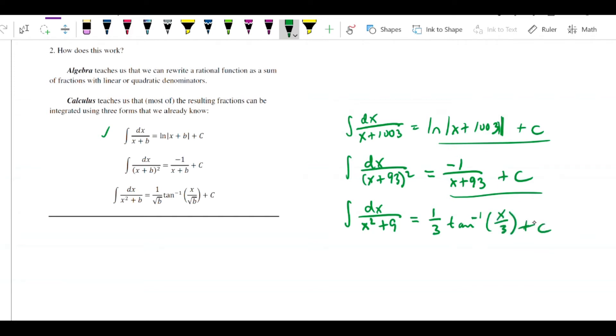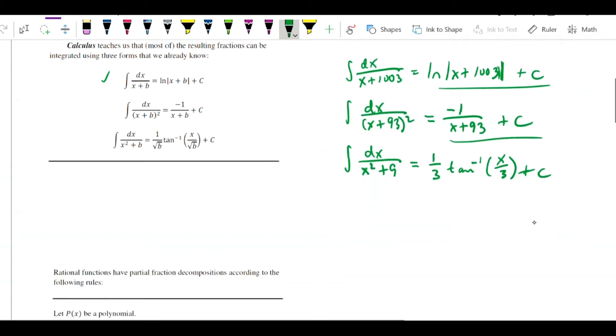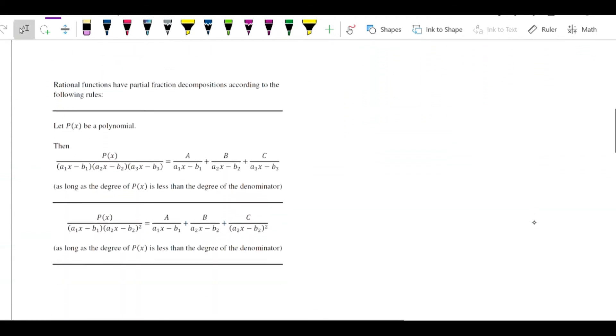So if we could decompose a rational function into these fairly simple types of components, then we'd be able to just add them up and find a complete antiderivative. Let me show you what the rules are, and this is a little bit abstract, but it will become more clear as we work with the examples.